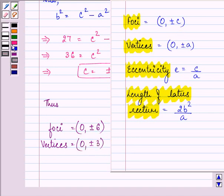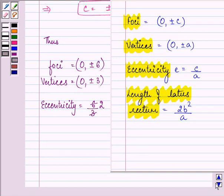Further, eccentricity, we have c by a. On simplifying, we have the answer as 2.